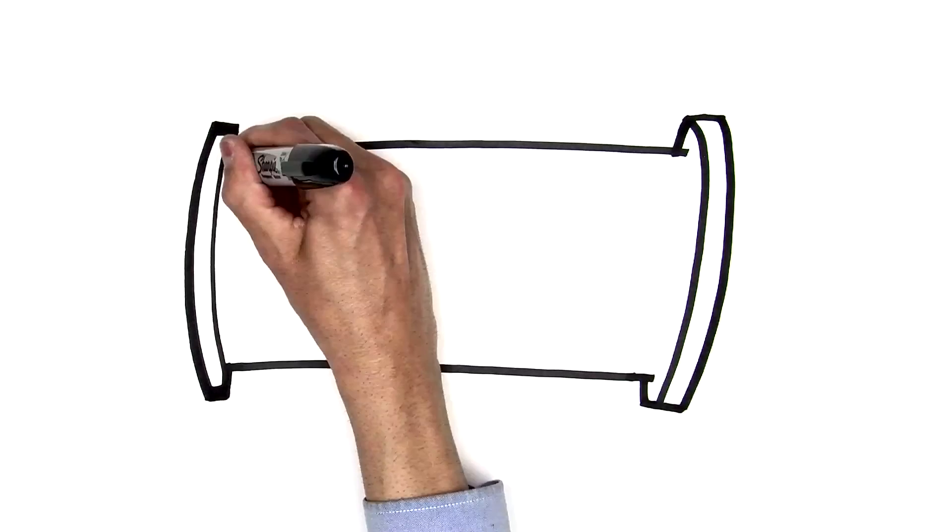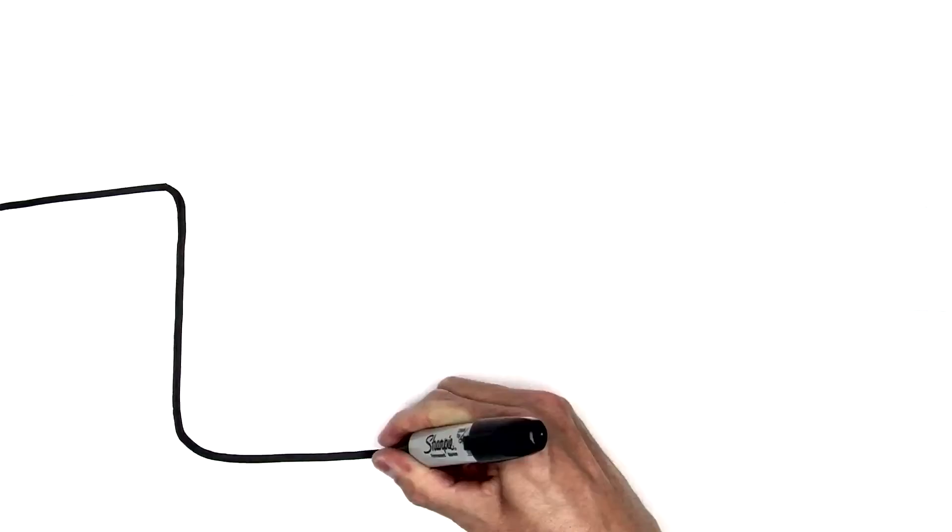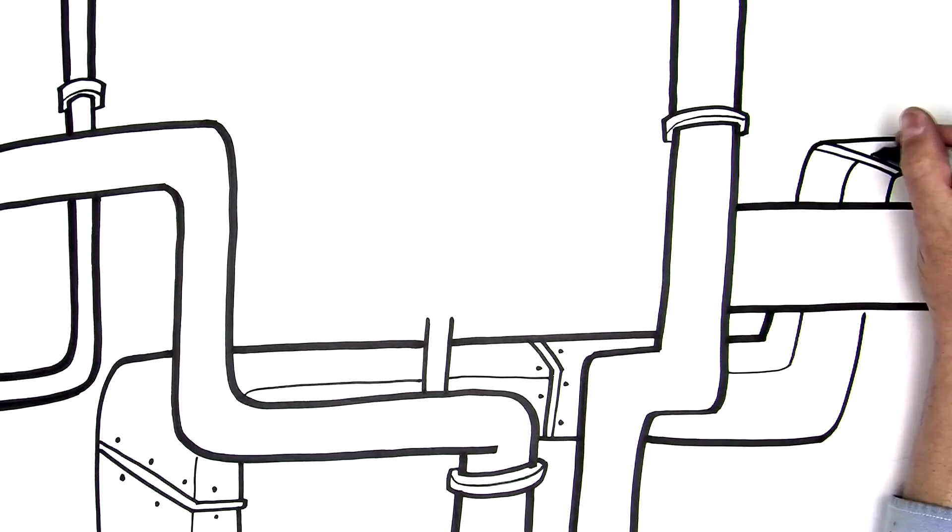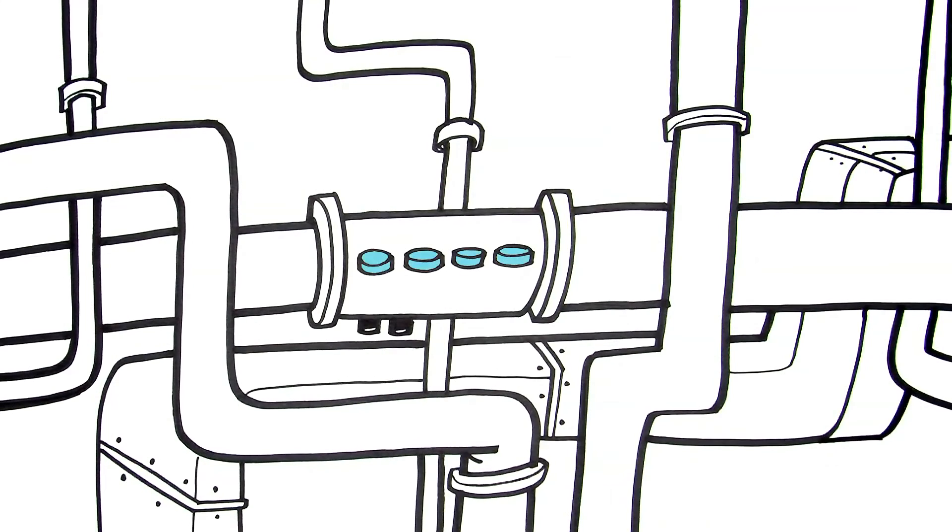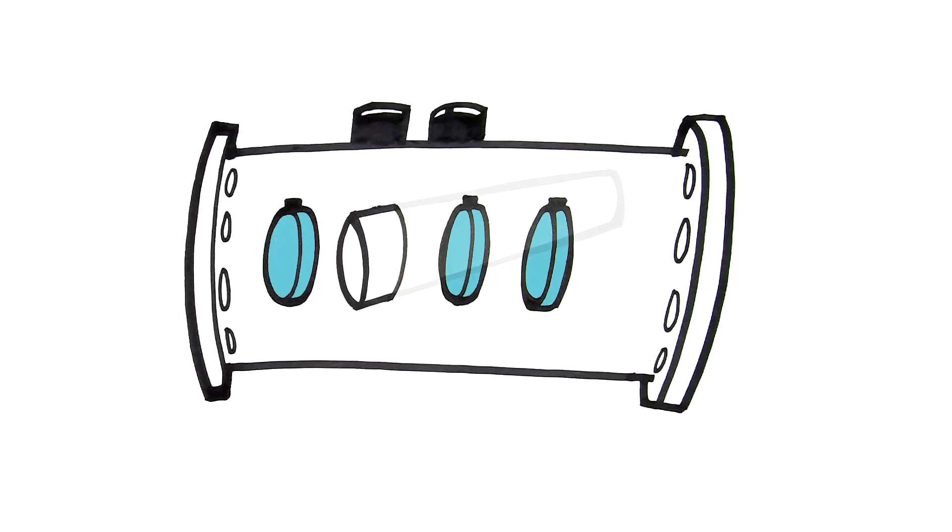Neptune Benson ETS UVs can be mounted horizontally or vertically. Their compact design works for new construction or retrofit. Changing lamps is quick and easy because there's no need to drain water from the chamber.